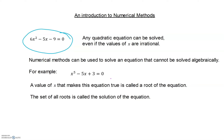What we're going to consider in numerical methods is if you have an equation that cannot be solved algebraically — for example, this equation here. If the value of x that makes it true is an integer, you could maybe find it by trial and improvement, or if it's a simple fraction. But if it's an irrational number, then that's going to be very hard to be exact.